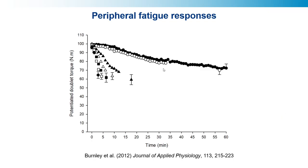Here's what we found. The severe intensity bouts, lasting between about 2 and 17 minutes, showed a very rapid drop in the potentiated doublet — clear peripheral fatigue — reaching approximately the same level irrespective of the time to task failure. In contrast, for the 90% and 80% critical torque bouts below critical torque, the rate of fatigue was four to five times slower. There was a decline in the potentiated doublet, so there is fatigue below critical torque, but it is clearly different in character.